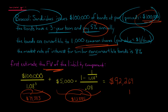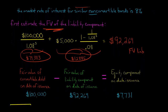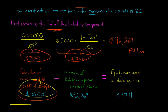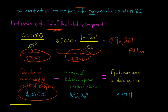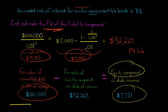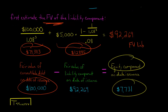That $92,269 is the fair value of the liability component — just looking at the debt and forgetting about the conversion feature. The fair value of the whole thing is $100,000, which we know because that was the proceeds the investors paid. So $100,000 minus the fair value of the liability component ($92,269) gives us $7,731. That is the value of the equity component — the conversion feature, which is essentially an option.